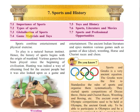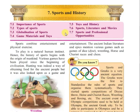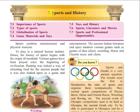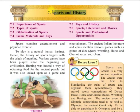We will also cover 7.3 Globalization of Sports, 7.4 Games, Materials and Toys, 7.5 Toys and History, 7.6 Sports, Literature and Movies, and 7.7 Sports and Professional Opportunities. In this chapter we shall see which sports were related to the history of sports.